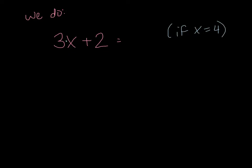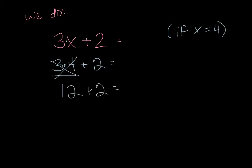Now let's plug and play. It's 3 times 4 plus 2. I must use my order of operations. There are no parentheses, there are no exponents — multiply is next. 3 times 4 is 12. Cross off what you did, bring down what you didn't. 12 plus 2 is 14. There's your answer. So easy, right? Let's do another we-do.